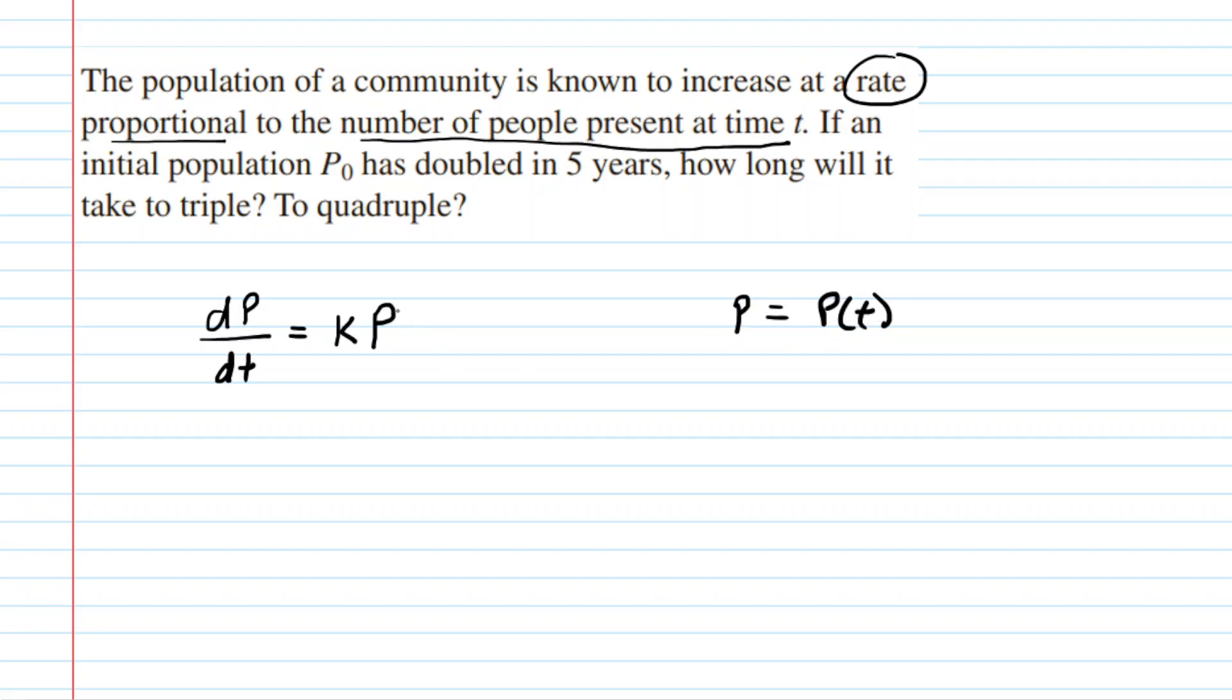So P represents the population at a particular moment in time. This is a separable differential equation, which basically means that we can gather the variable P on the left side and the variable t on the right side. So for example, you would multiply both sides of the equation by dt, which cancels it out on the left side, and then you can also divide both sides by P, cancelling it on the right side. So now you've separated your variables. You have dP over P on the left side, and on the right side you have k multiplied by dt.